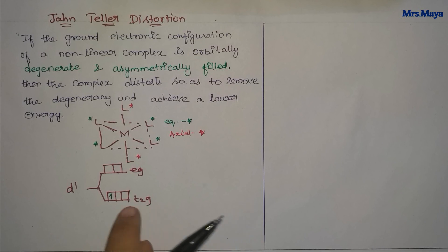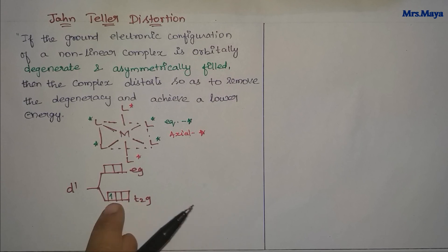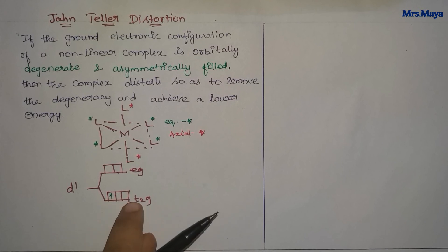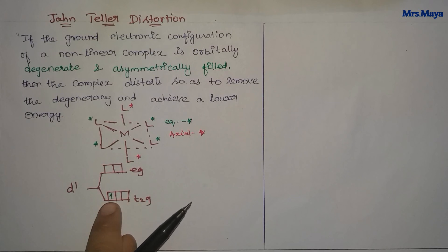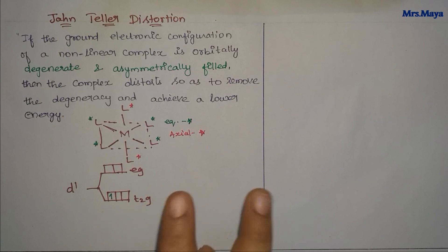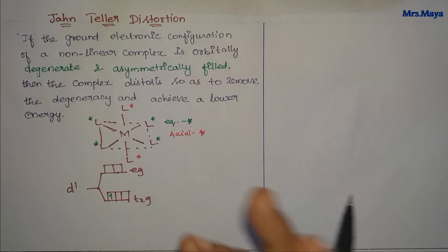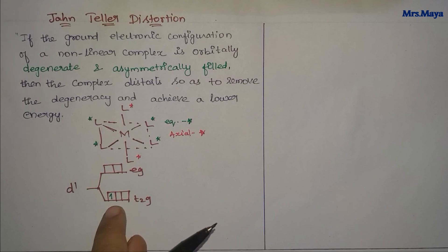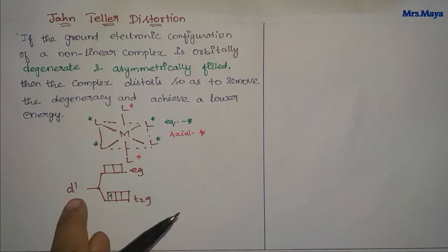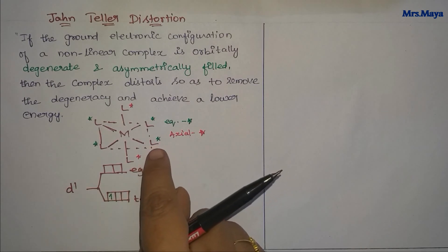Now, if you look at the degenerate orbitals, there is asymmetric filling. That means there is one orbital, there are two orbitals in the T2G set, and there is also a fill. Now, there is asymmetric filling. Definitely, this is a D1 system in a complex with a Jahn-Teller distortion.